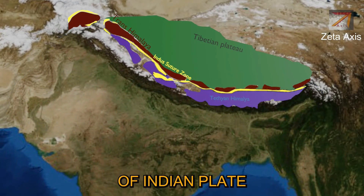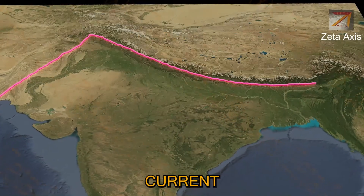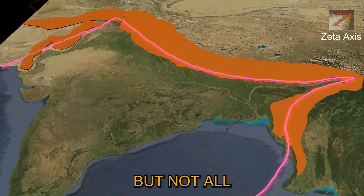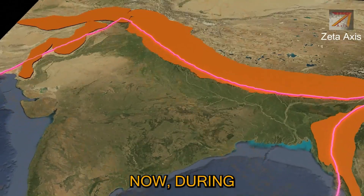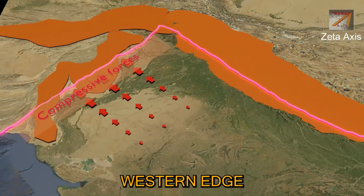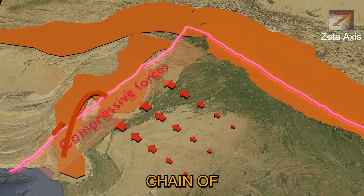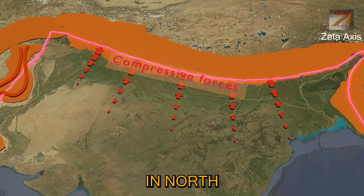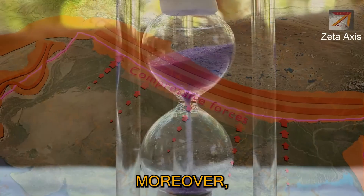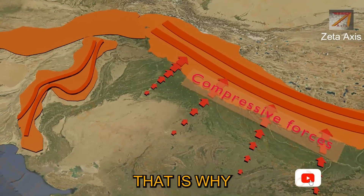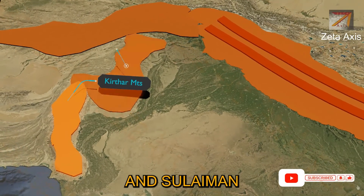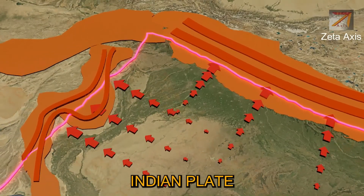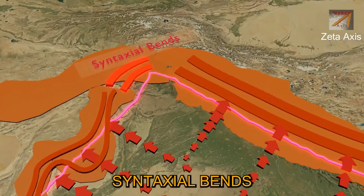Himalayas were formed due to the collision of the Indian plate and Eurasian plate. We can see the current boundary of the Indian plate, and because of the collision all along this boundary we see formation of mountains, but not all of these mountains are called Himalayas. On the western edge of the Indian plate, compressive forces acted in the north-western direction, creating a chain of mountains in the north-south direction. Those mountains are called the Kirthar mountains and Suleiman mountains and are not considered part of the Himalayas.